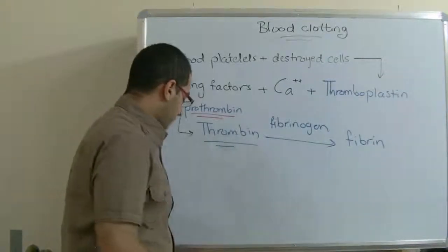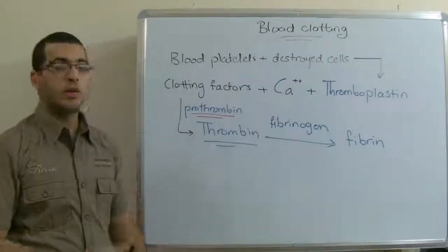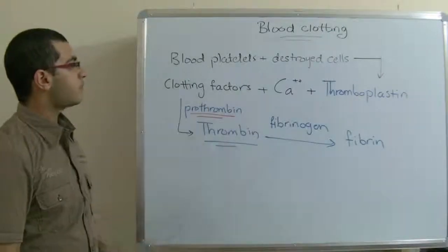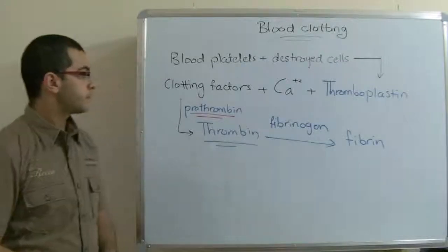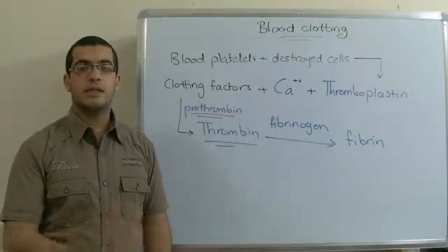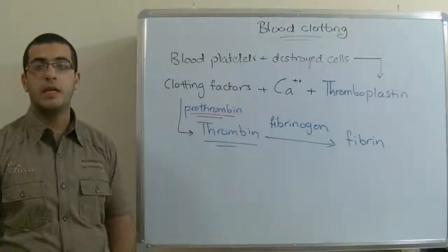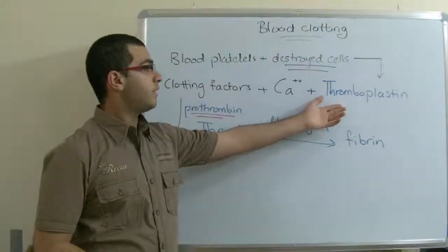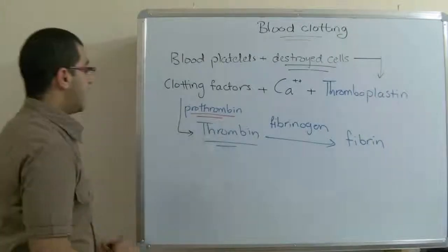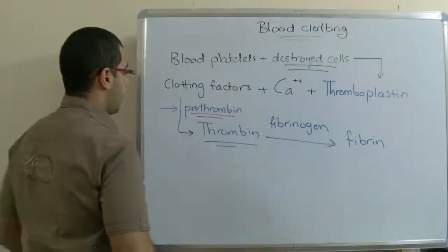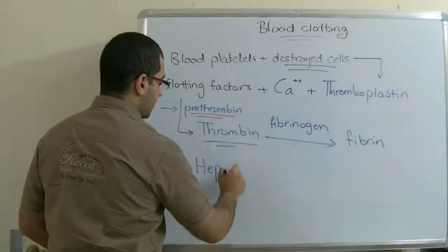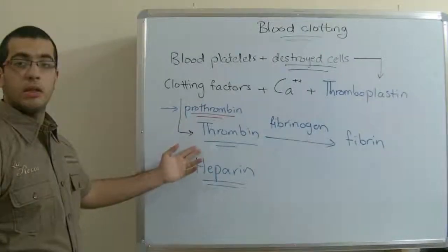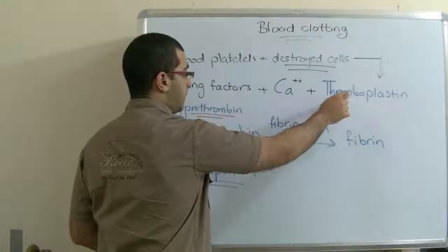Now, a question remains: why doesn't the blood clot during its passage through the blood vessels? Why does it only clot when it's exposed to a cut or a wound? The blood doesn't clot as it passes through the blood vessels normally because, first, it needs to destroy cells from the vessel walls in order to produce the Thromboplastin. Also, as the liver produces the Prothrombin with the help of vitamin K, it also produces another enzyme called Heparin. This Heparin prevents the conversion of Prothrombin into Thrombin so long as the Thromboplastin is not available.